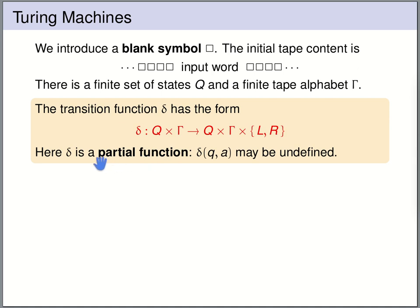The transition function delta is a partial function, so delta(q, a) can be undefined. If it is undefined, it means that if the machine is in state q and reads an a on the tape, then the machine stops. An undefined value for the transition function means that the machine stops the computation at that point.